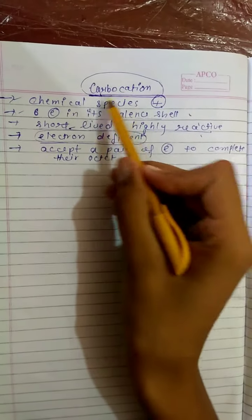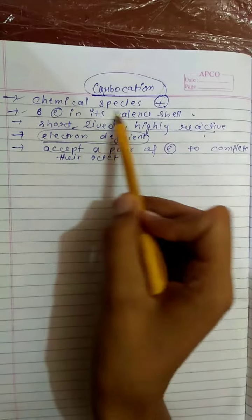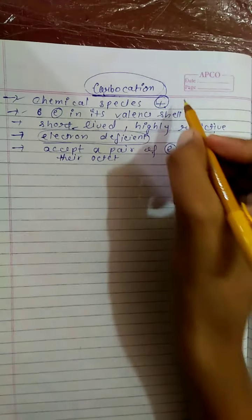Hello students, today we talk about carbocation. Carbocations are those chemical species which carry a positive charge on carbon atom.